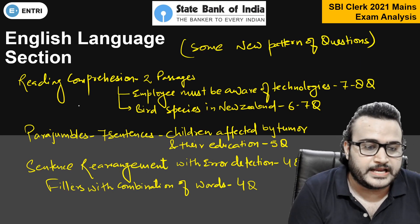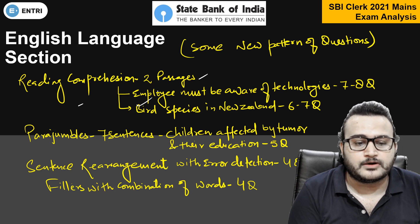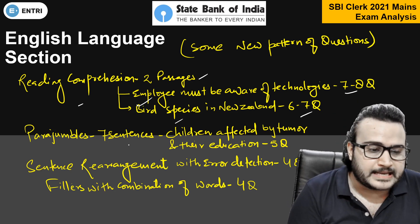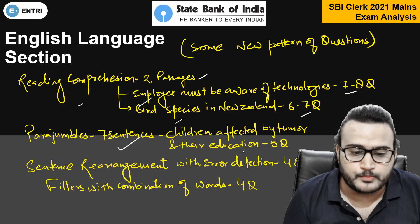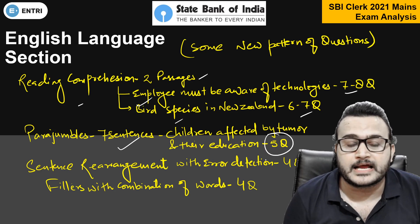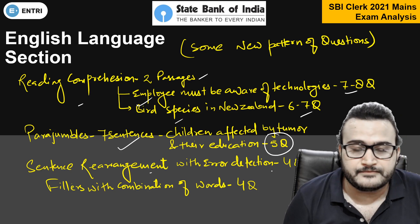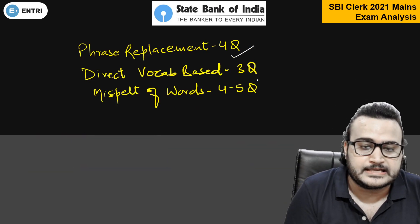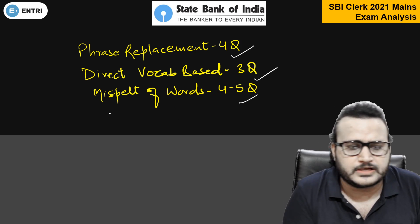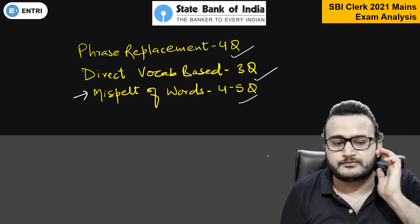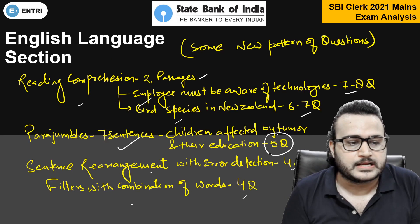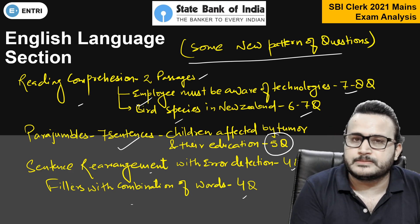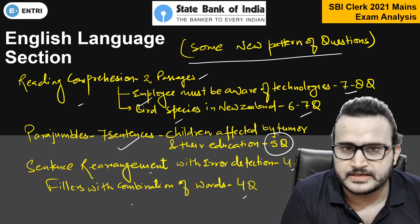Talking about the English language section — reading comprehension: 2 passages. First passage on 'employer must be aware of technologies' — 7 to 8 questions. Second passage on 'bird species in New Zealand' — 6 to 7 questions. Para-jumble: 7 sentences, theme was children affected by tumour and their education — 5 questions. Sentence arrangement with error detection — 4 questions. Fillers with combination of words — 4 questions. Phrase replacement — 4 questions. Direct match based — 3 questions. Misspelt word questions were also given — 4 to 5 questions. English language saw lots of new patterns, and the level was similar to the previous year, but new question patterns were present in the examination.